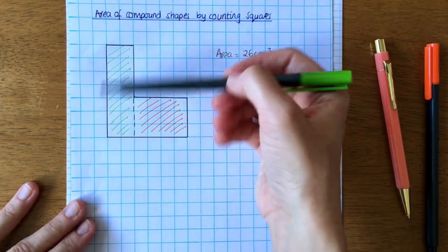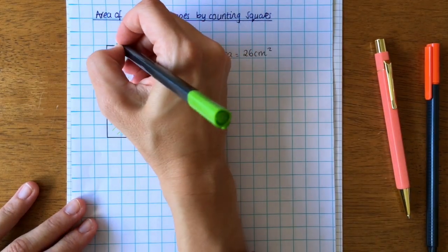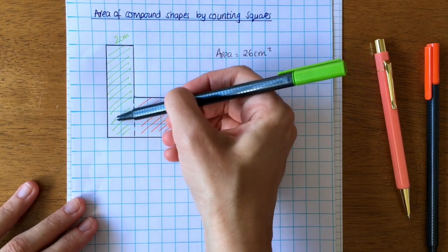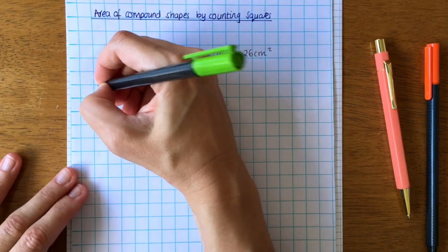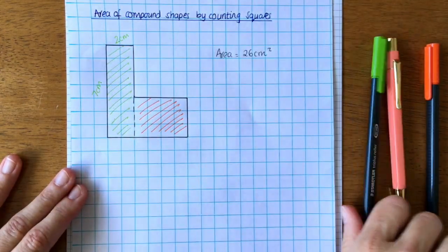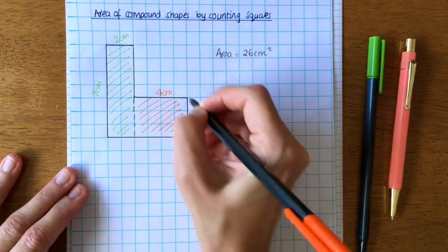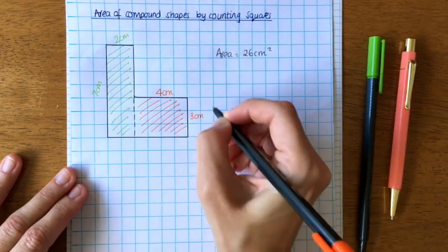We need to write down the length and the width. So obviously that's two centimeters across. This is 1, 2, 3, 4, 5, 6, 7 centimeters. My orange one is four centimeters by three centimeters.